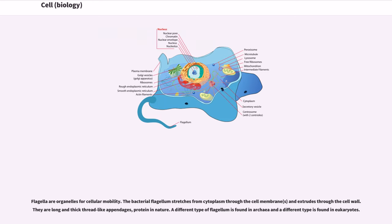Flagella are organelles for cellular mobility. The bacterial flagellum stretches from cytoplasm through the cell membrane and extrudes through the cell wall. They are long and thick thread-like appendages, protein in nature. A different type of flagellum is found in archaea and a different type is found in eukaryotes.